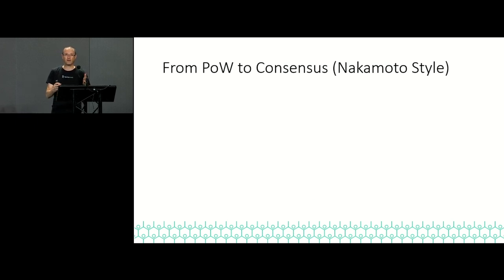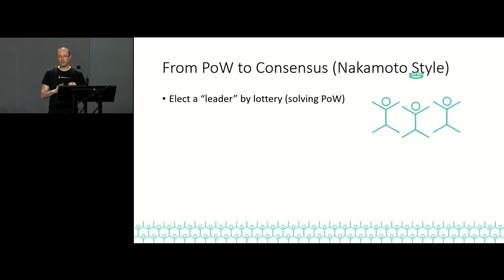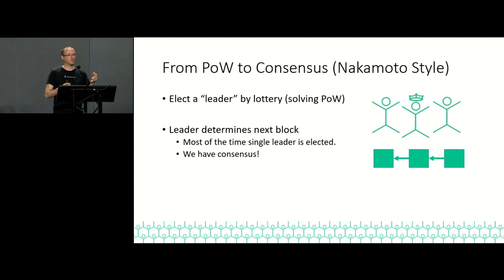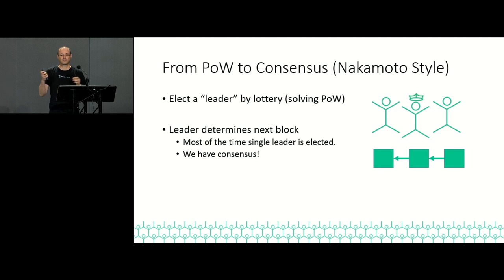How did Satoshi get from there to an actual consensus mechanism? His idea was to elect a leader. This happens by everybody trying to solve a proof of work, and whoever solves it is elected leader. The leader gets to determine the next block — basically what happens in, say, a 10-minute period. Because most of the time there's only a single leader due to the difficulty of the puzzle and how we choose the parameters, we get consensus. If there's only one, everybody can agree on what happened.